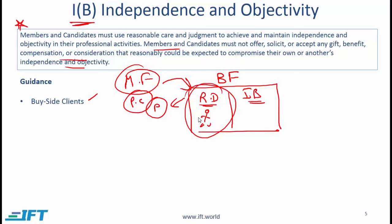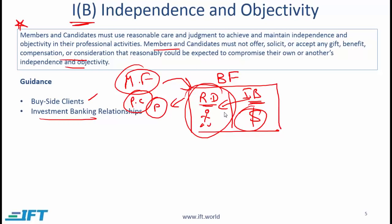Another scenario is investment banking relationships. Your firm also has an investment banking department, and say that department is trying to work with Pfizer to do a secondary offering — raising more funds for Pfizer. If the investment banking department wins this deal, they will make a lot of money. What the investment banking department might try to do is influence you to write positive reports on Pfizer. But that is not something you should do — your reports should be totally independent and objective.